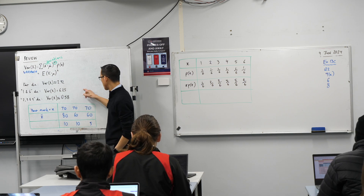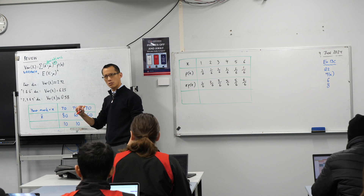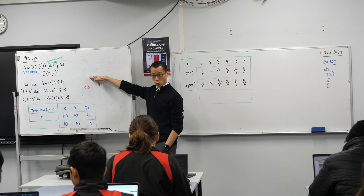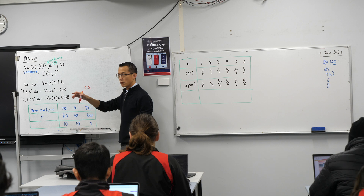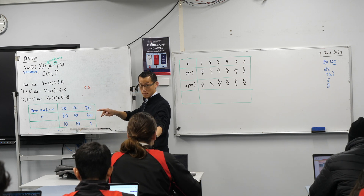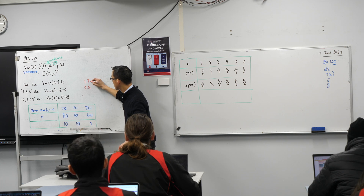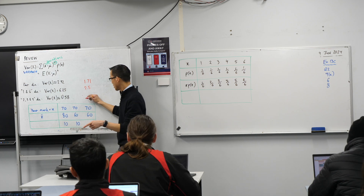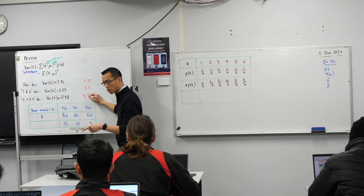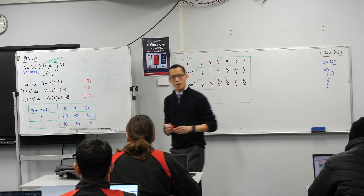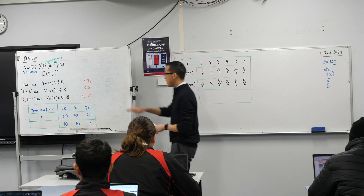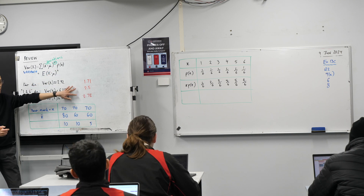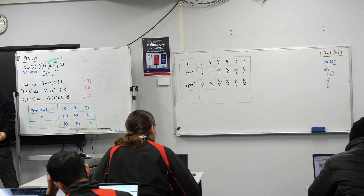The middle one — square root of 6.25 — is 2.5. Square root of 2.92 is approximately 1.709, so I'll round that to 1.71. And the last one, square root of 0.58, is approximately 0.76. These three numbers are actually much more useful than the variance, because we squared to get variance and now we've taken the square root to get back to the right size of numbers. Note that 0.76 is bigger than 0.58: when you take the square root of any number less than 1, it actually gets bigger, not smaller.